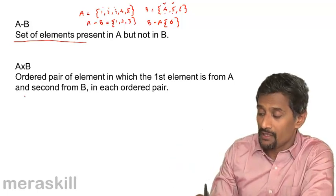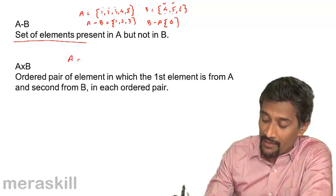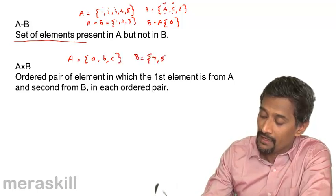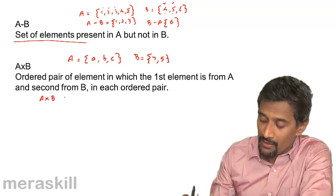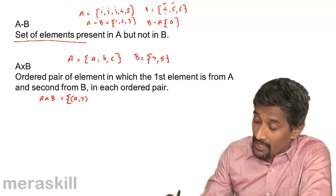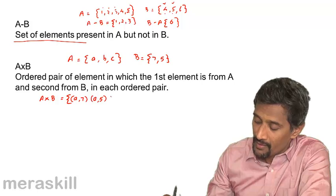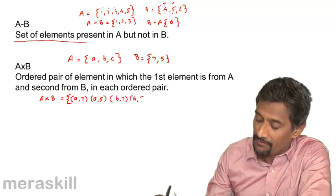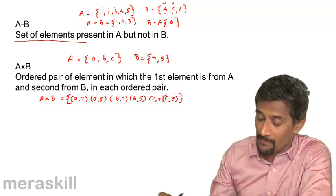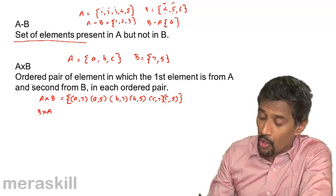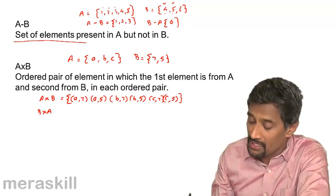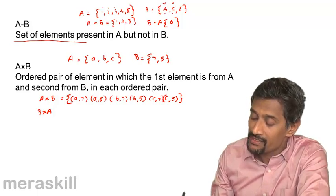Now, A cross B — the Cartesian product. Suppose A is {a, b, c} and B is {7, 5}. A cross B means making ordered pairs where each element of A is paired with each element of B. So A cross B is: (a,7), (a,5), (b,7), (b,5), (c,7), (c,5). In each ordered pair, the first element is from A and the second is from B.